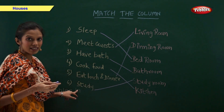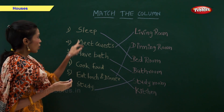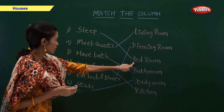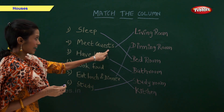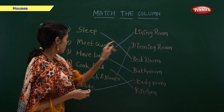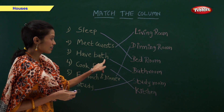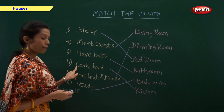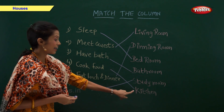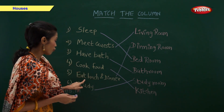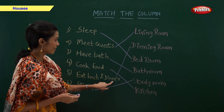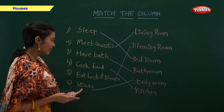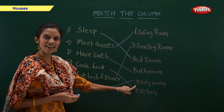So quickly we will revise. We sleep in the bedroom. We meet guests in the living room. We take a bath in the bathroom. My mother cooks food in the kitchen. We eat lunch and dinner in the dining room. And we study in the study room.